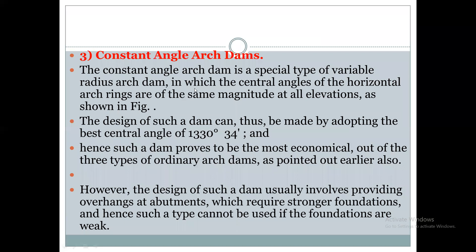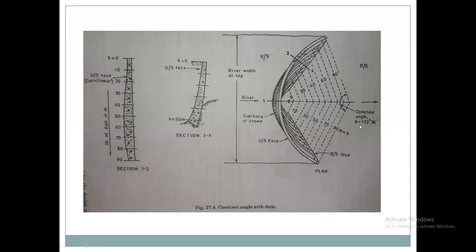Constant angle arch dams are a special type of variable radius arch dam in which the central angles of the horizontal arch rings are of the same magnitude at all elevations. This angle is the same at all elevations. Such dams are designed by adopting the best central angle of 133 degrees 34 minutes, which is the optimal central angle.